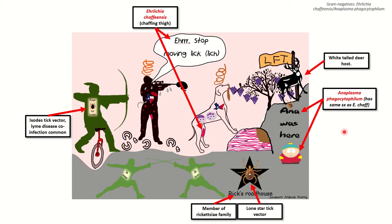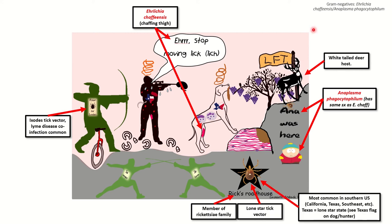The white-tailed deer is the host, and that's represented here as a white-tailed deer. It's most common in the southern U.S., such as California, Texas, and the southeast. Texas is the lone star state, so I've given you a lone star — that's the Rickettsia star, Rick's Roadhouse — but also put in the state of Texas as a sort of badge of honor on both the dog and the man here.